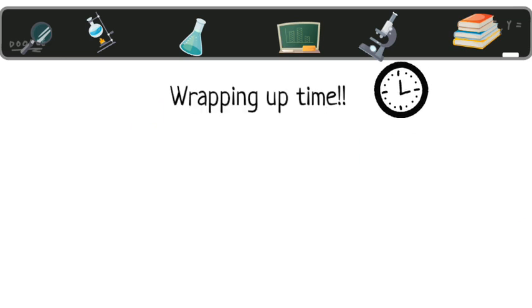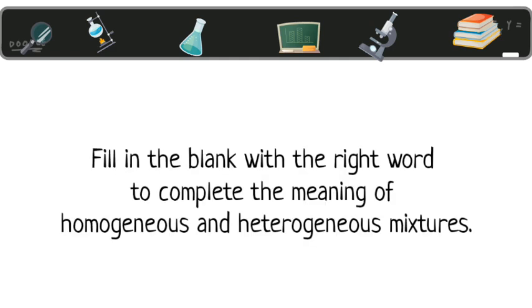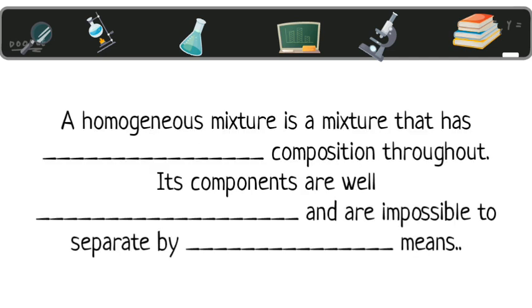Let's wrap up our lesson. Fill in the blank with the right word to complete the meaning of homogeneous and heterogeneous mixtures. A homogeneous mixture is a mixture that has uniform composition throughout. Its components are well mixed and are impossible to separate by physical means.